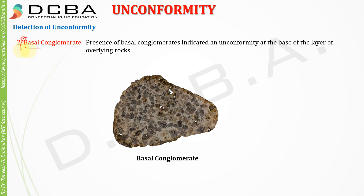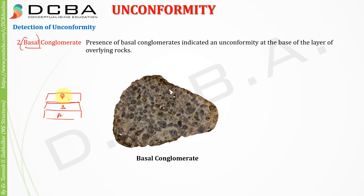The second detection method is basal conglomerate. The presence of basal conglomerate indicates an unconformity at the base of the overlying rock layer. It is called 'basal' because it is present right at the base of the overlying rock — for example, if we have layers A, B, C, and D, the basal conglomerate would be found right at the base of D.